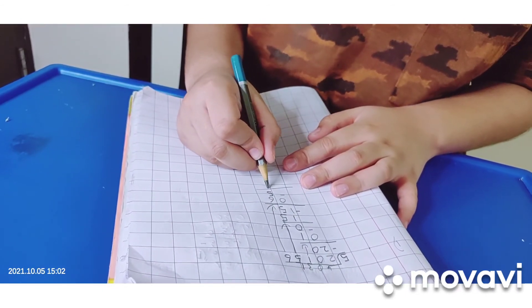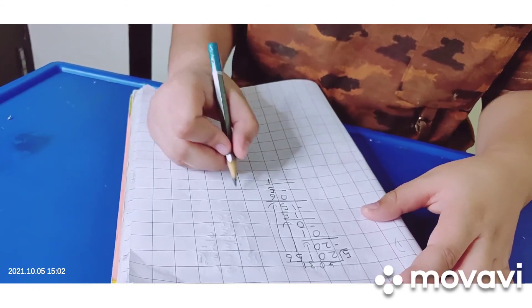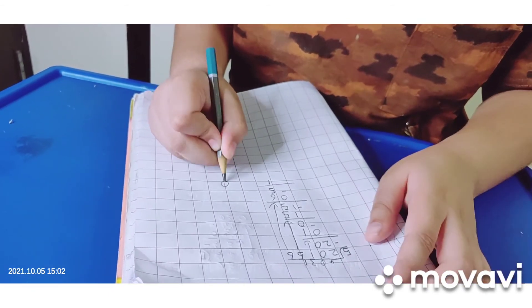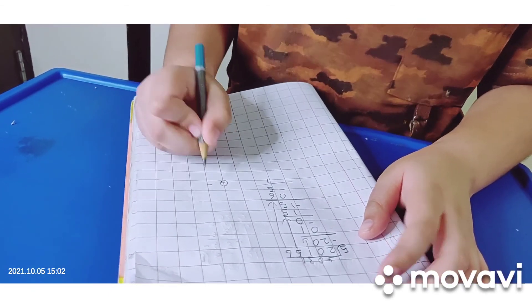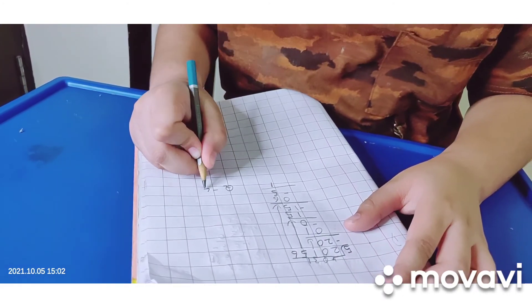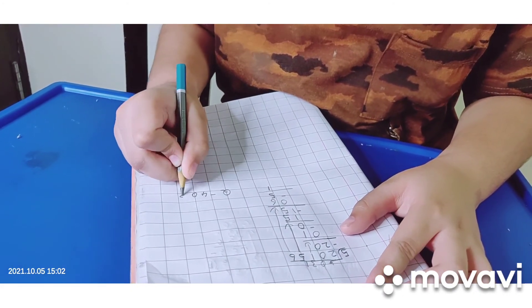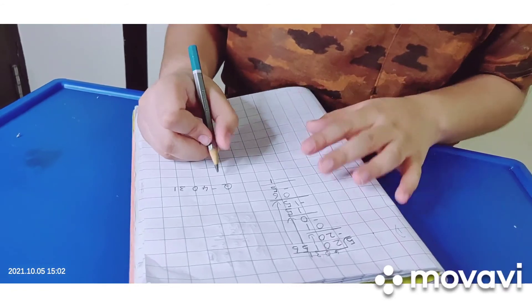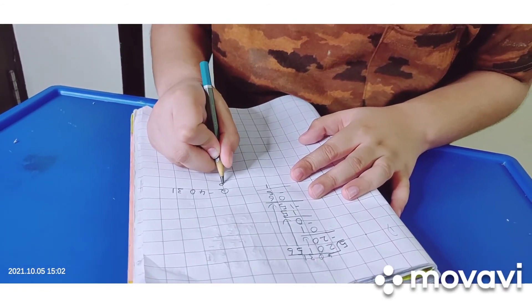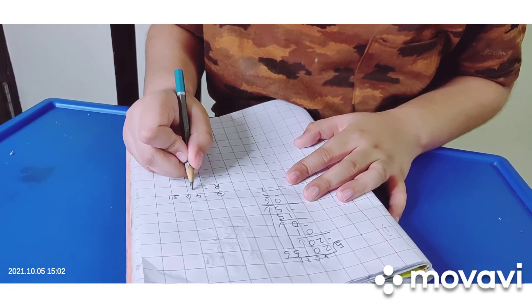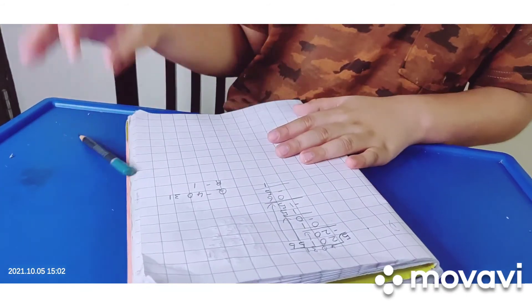Now we are going to write the quotient. In quotient, I am writing short form Q. And the remainder is 1.